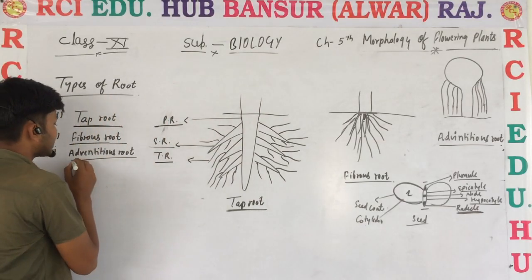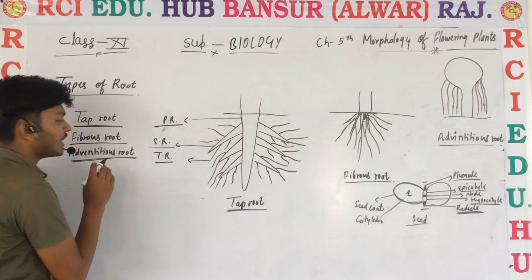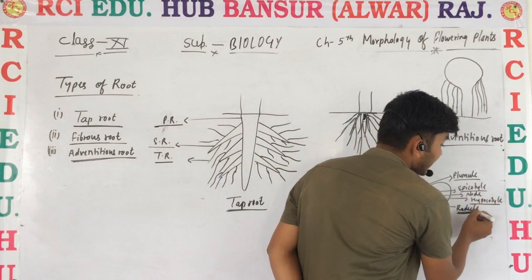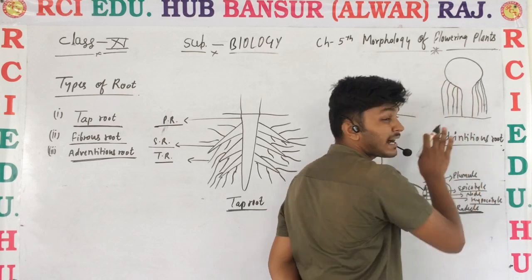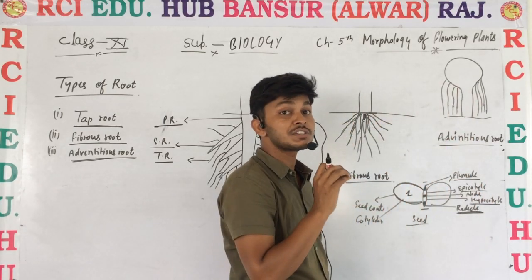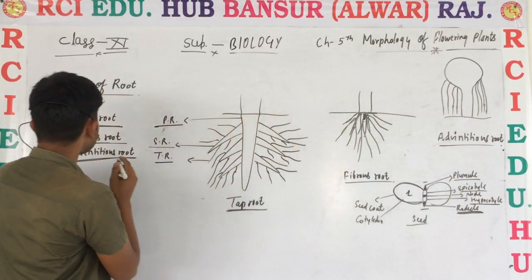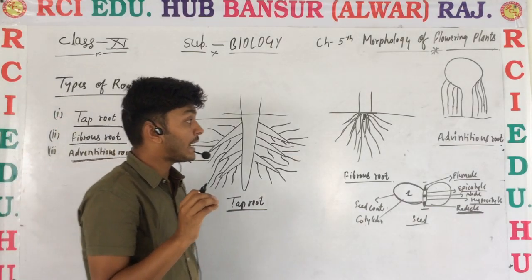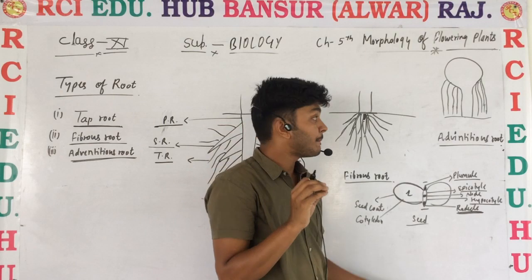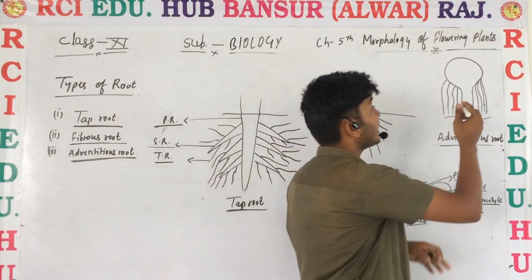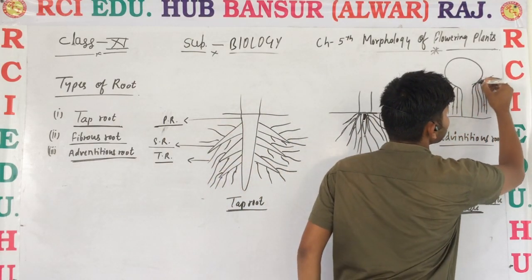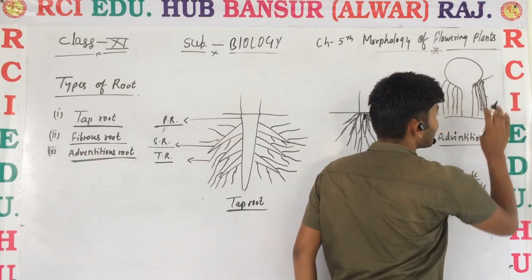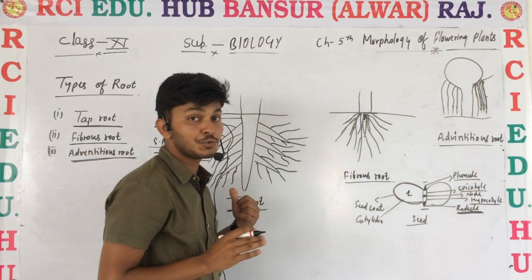Next, we talk about adventitious root. This is the third type of root. If in a plant, roots emerge from any part of the plant other than the radical, those types of roots are known as adventitious roots. The best example is the banyan tree. In the banyan tree, roots automatically emerge from the branches of the plant.